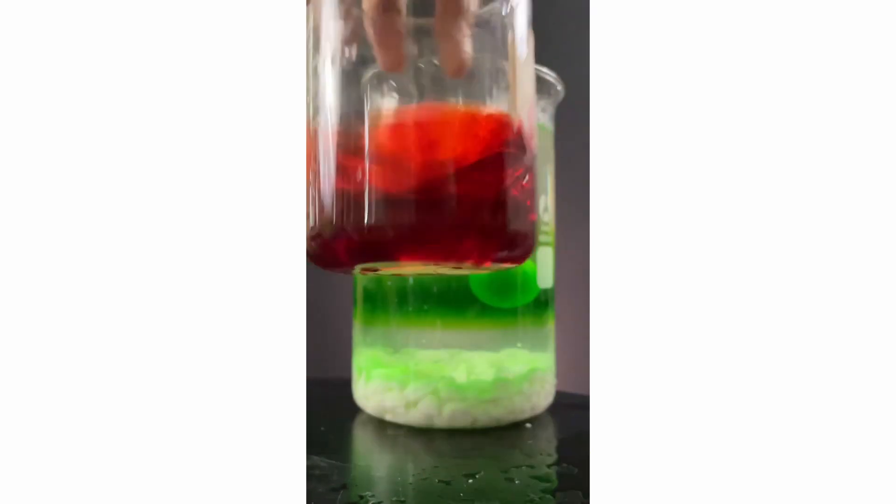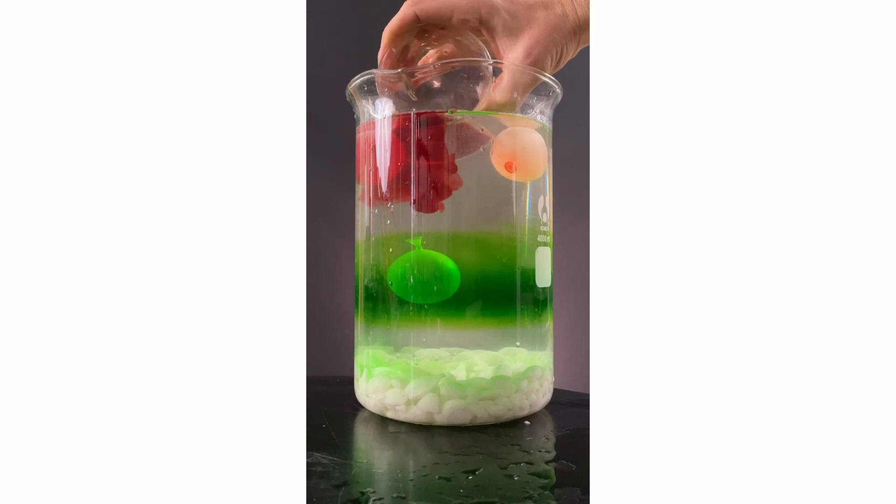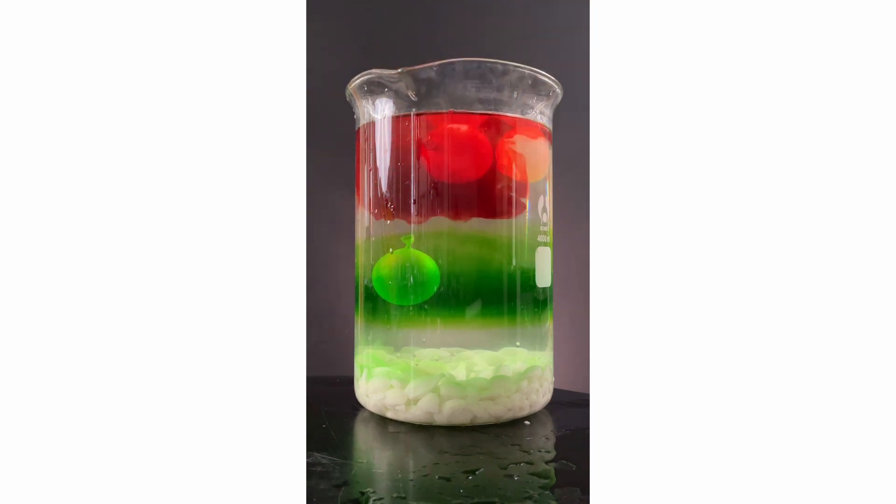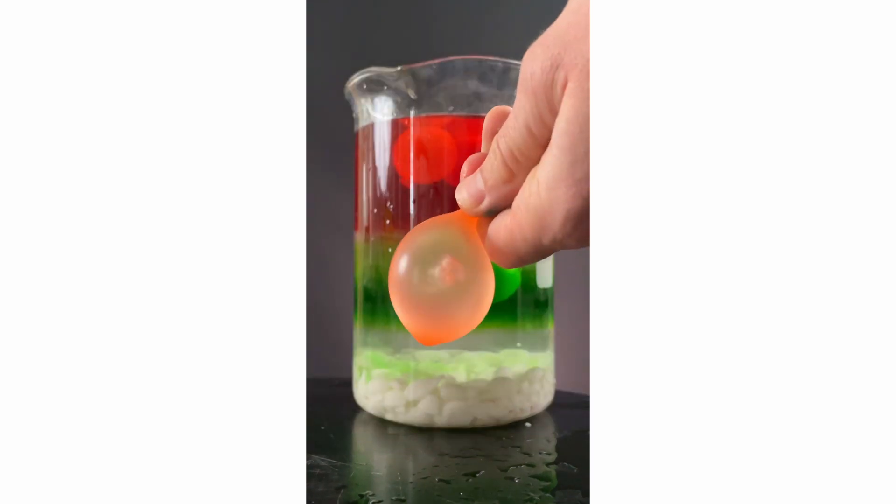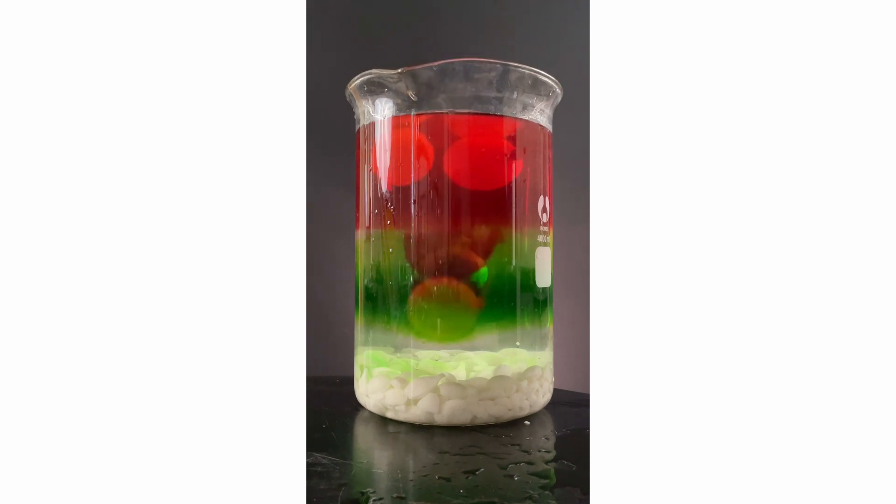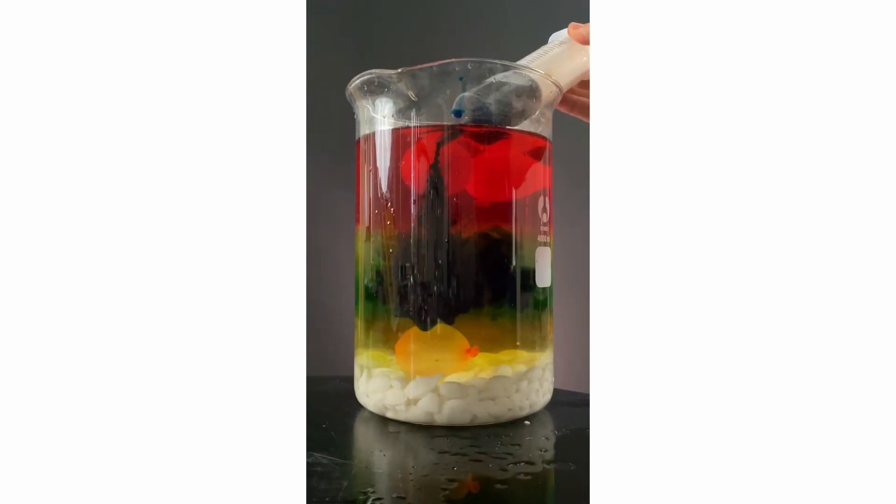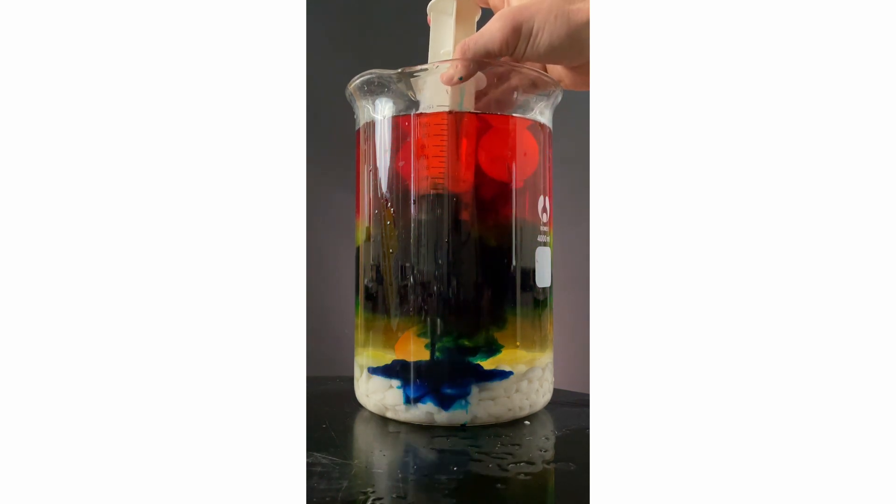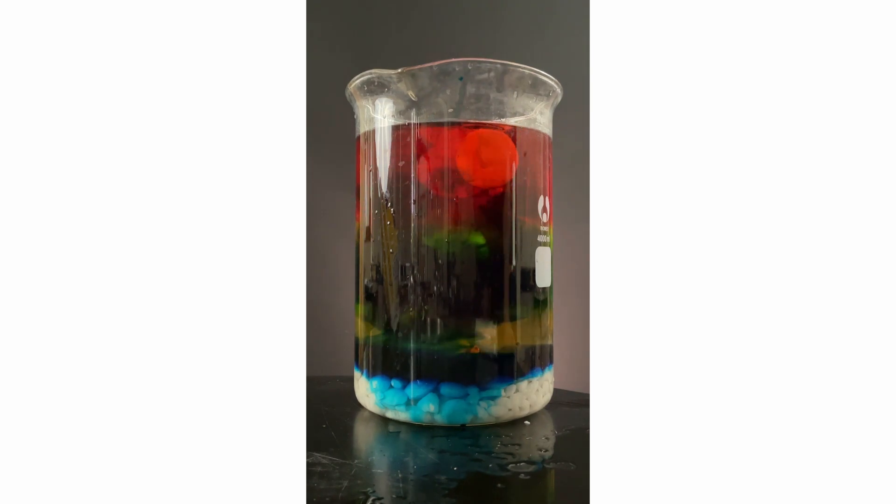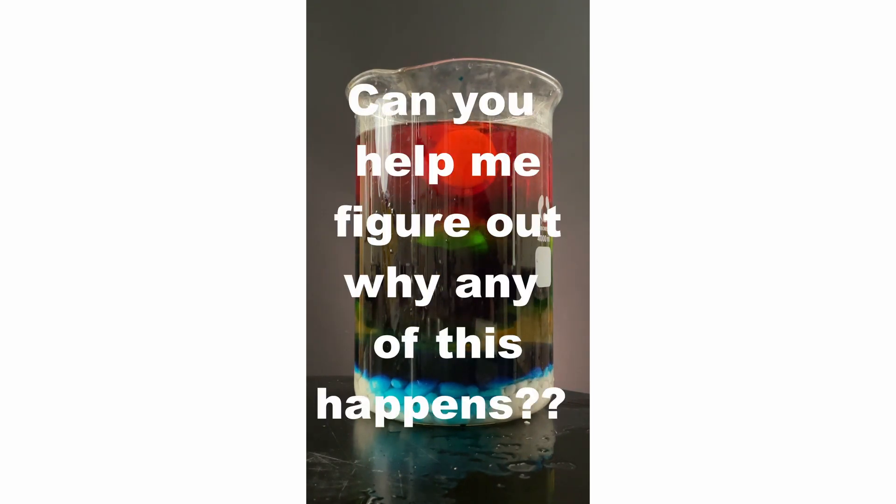Take solution from the top, add red dye, slowly pour back in, and we see a visually satisfying red band. Take solution from the bottom, add to a balloon, and the balloon sinks right to the bottom. Take solution from the bottom, mix with blue dye, add it to the top, and it sinks to the green band level. It's weird. But if we put the blue dye all the way at the bottom, it'll stay below all the layers. Can you help me figure out why any of this happens?